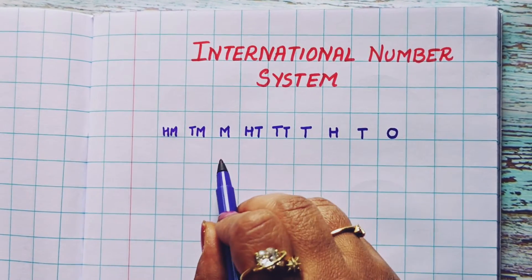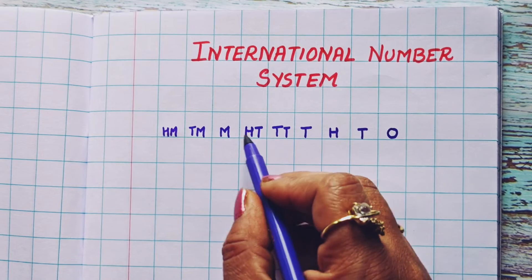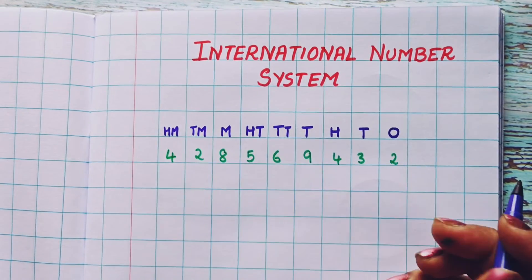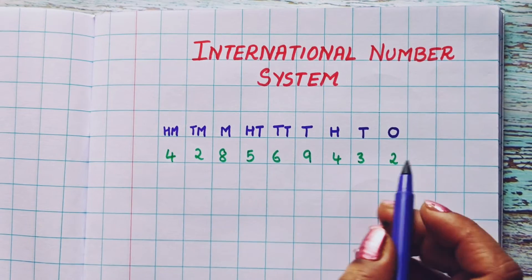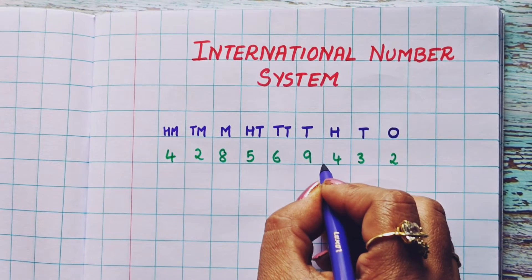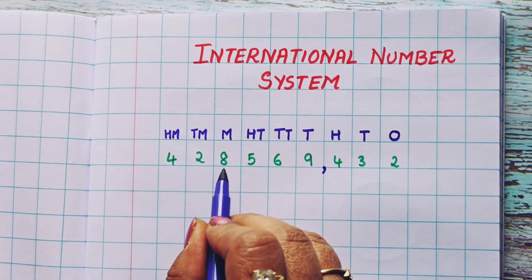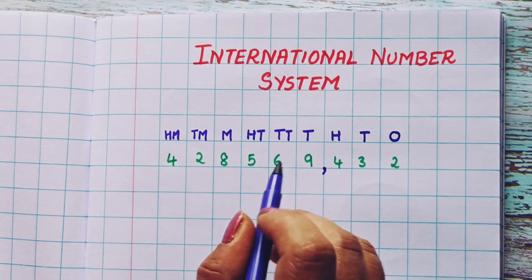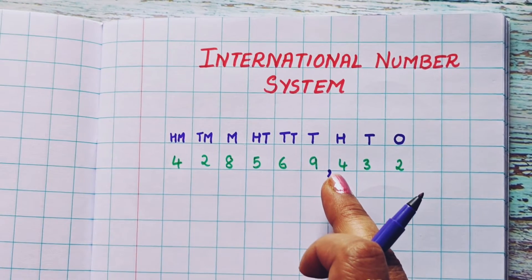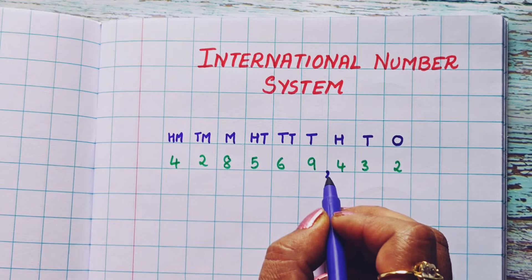So the places arranged in the international number system are: ones, tens, hundreds, thousands, ten thousands, hundred thousands, million, ten million, and hundred million. Now, using the same number as before, the first comma we give after the hundreds place. In the international number system, all the commas will be after a gap of three digits. Whereas in the Indian number system, after the first comma we give a gap of two digits — but in the international number system, we give a comma after every three digits.